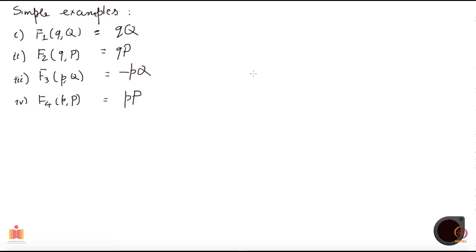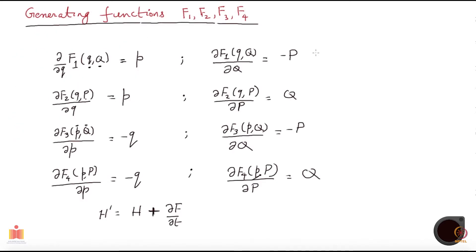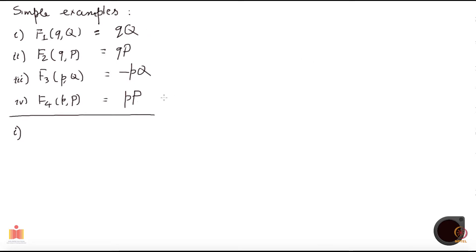Let us look at the first case explicitly. If you take the partial derivatives as required — meaning for F1 — then what you will get is the following. Doing that calculation will give you that capital Q, the new coordinate, will be p and the new momenta would be minus q. So it will just interchange q and p, as I believe we saw earlier. This just produces an interchange of the coordinates.